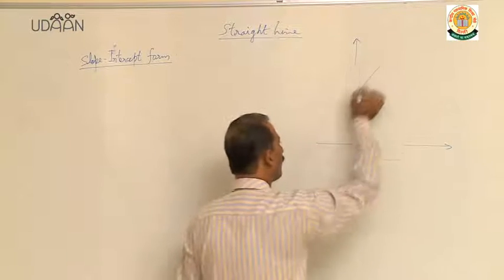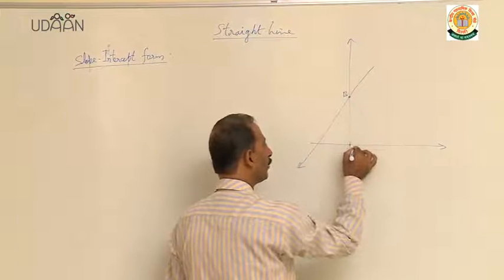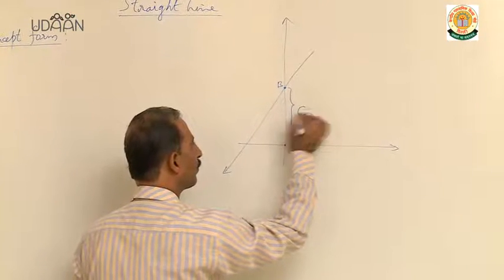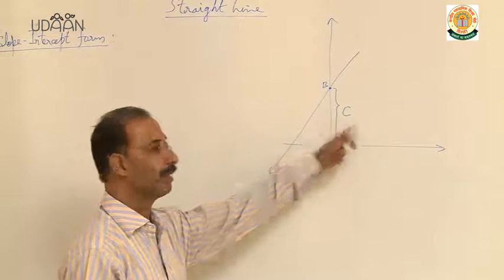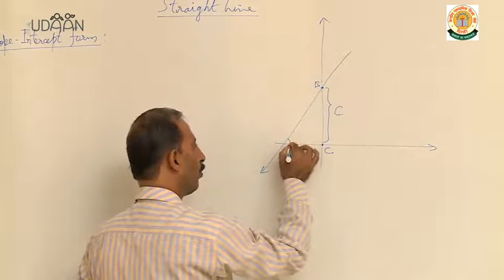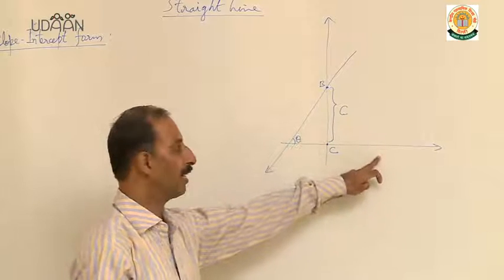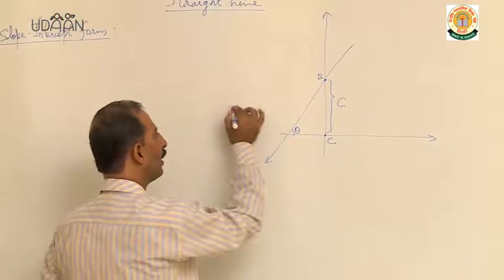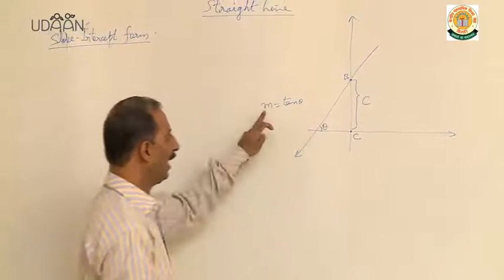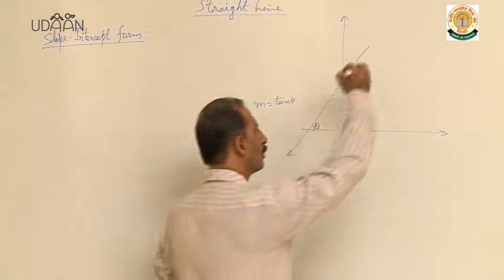If a line cuts the y-axis at a point, say b, then the distance from the origin to this point of intersection is known as y-intercept. I have given the name as small c. So the length of this y-intercept is small c. Suppose this line makes angle theta with the positive direction of x-axis, then slope is tan theta. So values of m and c are given, then we have to find out the equation of a line.